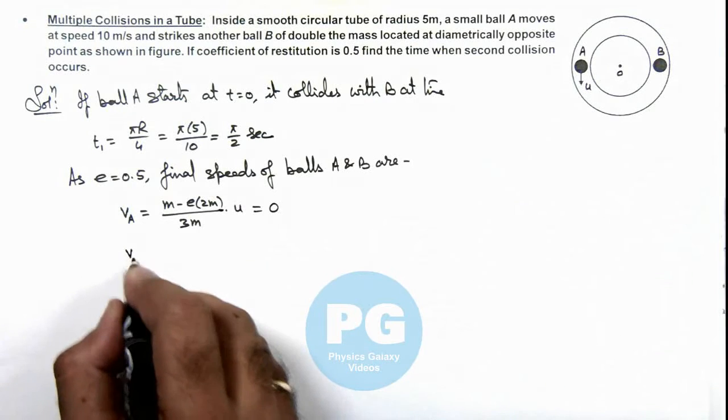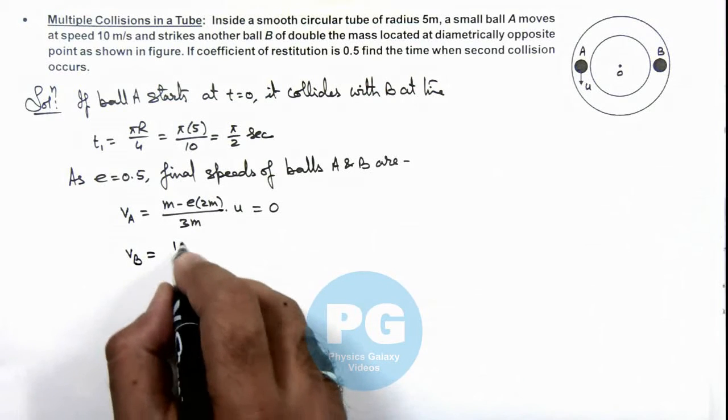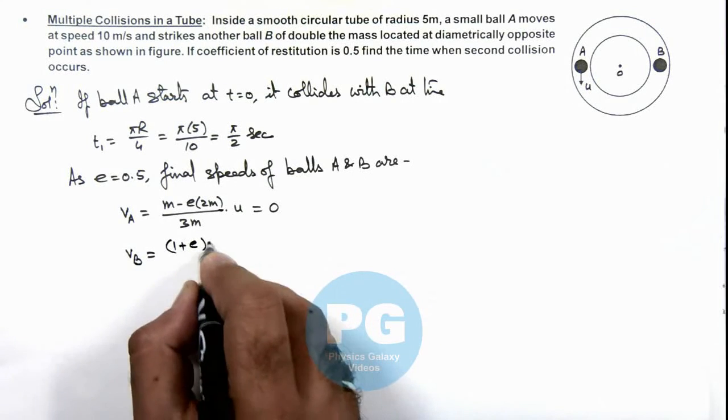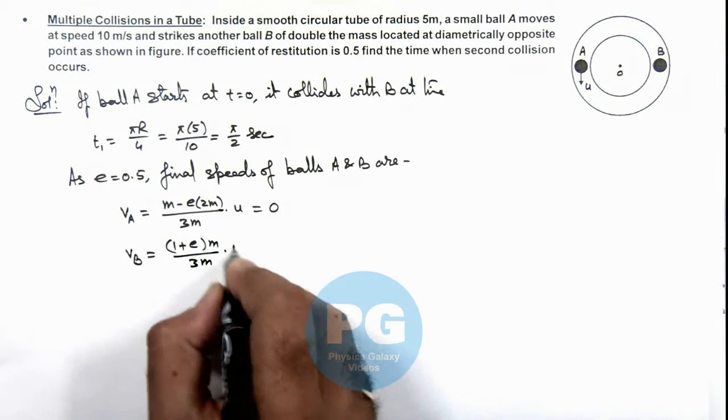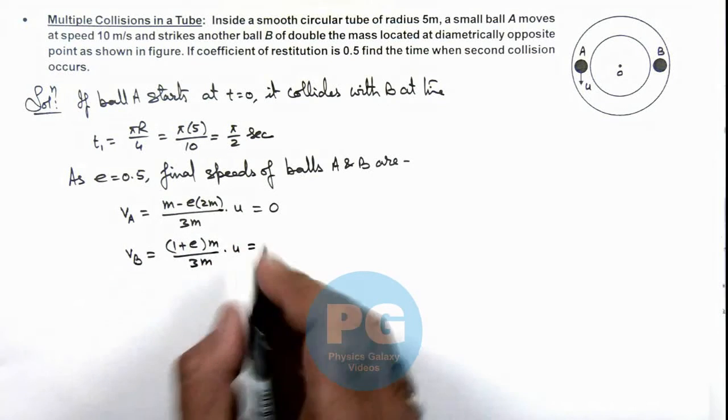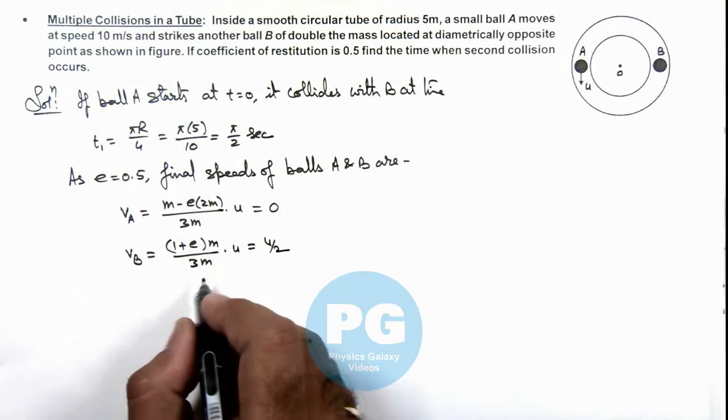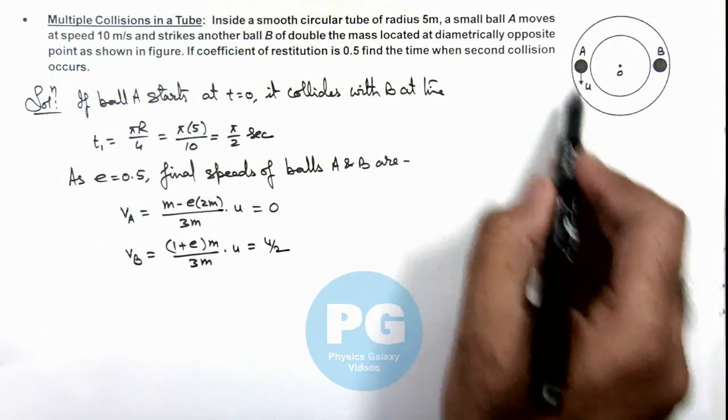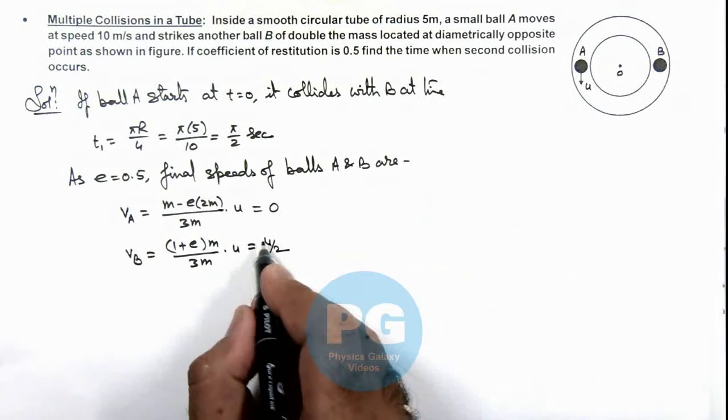If we calculate the velocity of ball B, this can be written as (1 + e) × (mass of ball A) / (3m) × u. If we substitute e as 0.5, this will be u by 2. In this situation, ball A will come to rest at this position and B will start moving with a speed u by 2.